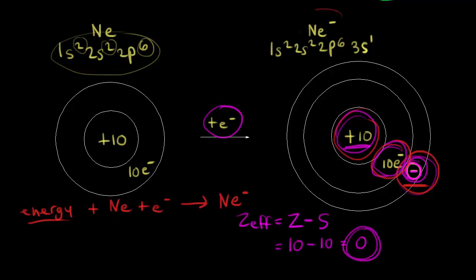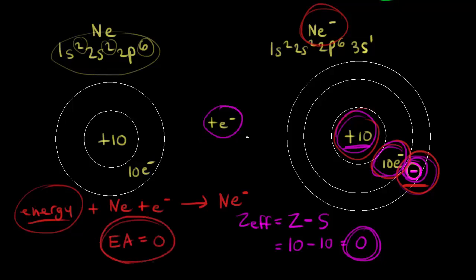This anion that we intended isn't going to stay around for long. It takes energy to force this onto our neutral neon atom, so you could say that the electron affinity is positive here. But usually you don't see positive values for electron affinity for this sort of situation. Most textbooks would just say the electron affinity of neon is zero, since it is hard to measure the actual value.